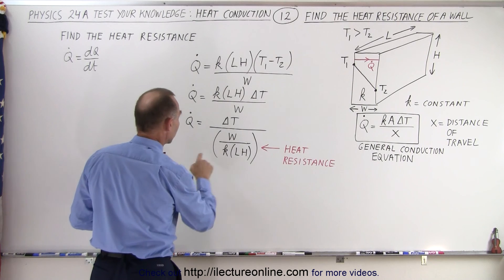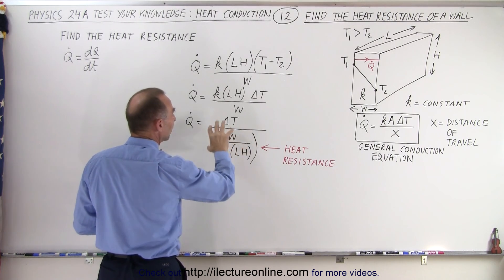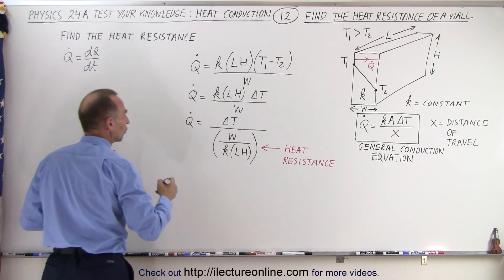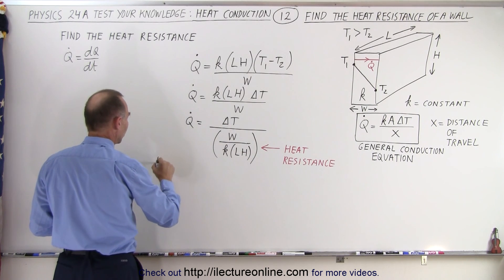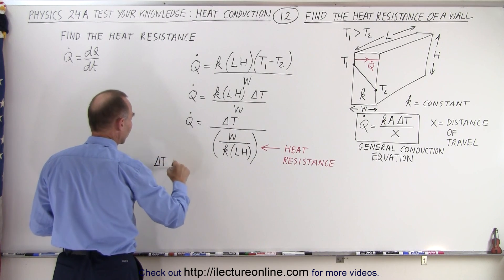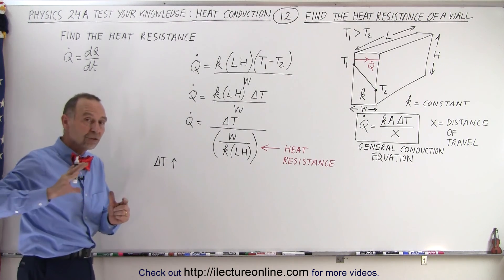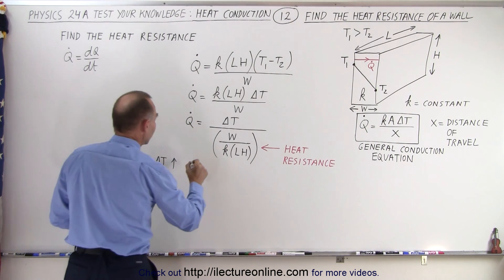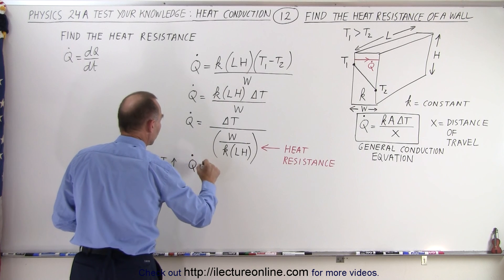So here, notice now, let's take a look here and see what happens when these things change. So first of all, what happens when delta T goes up? Well, when delta T goes up, there's more of a drive to push the heat through. That means that Q dot will go up as well.